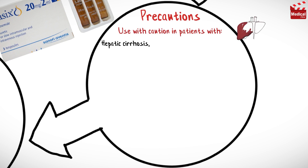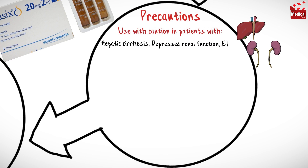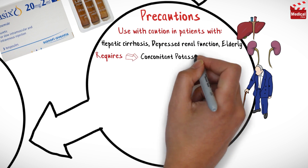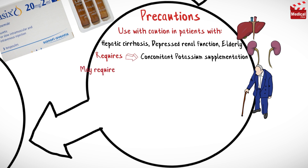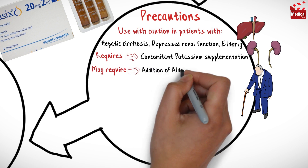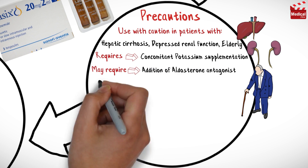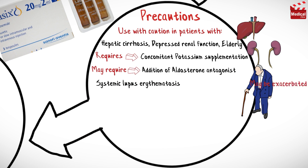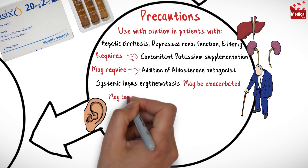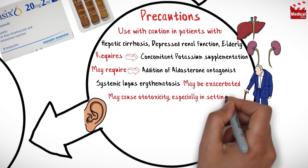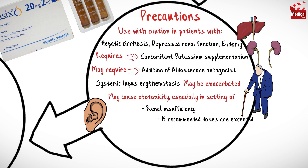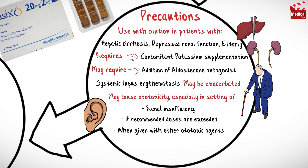Use with caution in patients with hepatic cirrhosis, depressed renal function, and the elderly. It generally requires concomitant potassium supplementation and may also require addition of an aldosterone antagonist. Systemic lupus erythematosus may be exacerbated by the drug, and it may cause ototoxicity, especially in the setting of renal insufficiency if recommended doses are exceeded or when given with other ototoxic drugs.